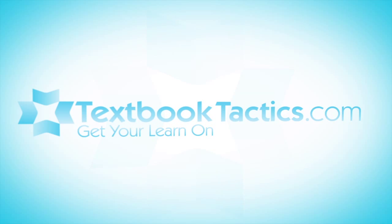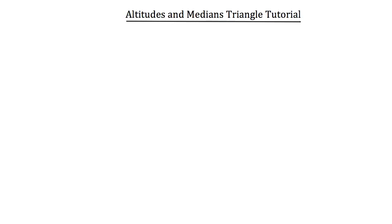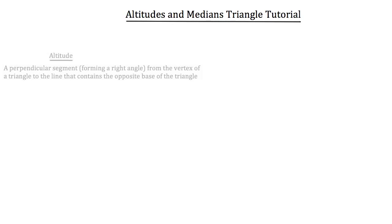This is a tutorial on altitudes and medians of triangles. Let's first begin by discussing altitudes. An altitude is a perpendicular segment — one that forms a right angle — from the vertex of a triangle to the line that contains the opposite base of the triangle.